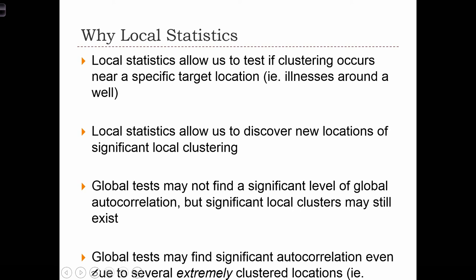So why do we need these local statistics? First, local statistics allow us to test if clustering occurs near a specific target location. For example, if we have a disease outbreak map, we can see if illnesses tend to cluster around a source of polluted water. Local statistics also allow us to discover new locations of significant local clustering that we weren't aware of before applying the local tests.